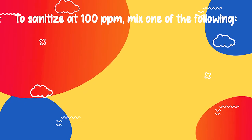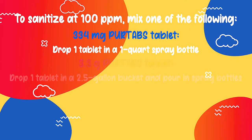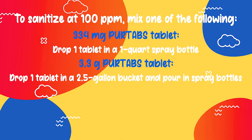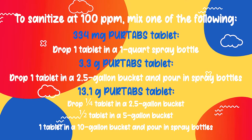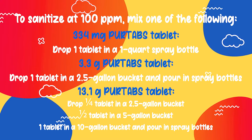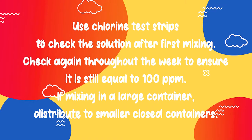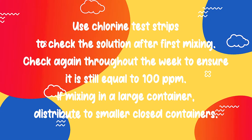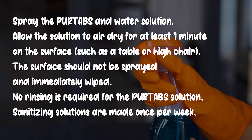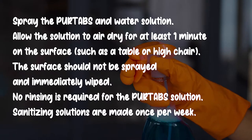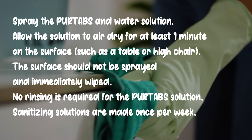To sanitize at 100 ppm, mix one of the following: for a 334 mg Pure Tabs tablet, drop one tablet into a one-quart spray bottle; for a 3.3 gram tablet, drop one tablet into a 2.5-gallon bucket and pour into spray bottles; for a 13.1 gram tablet, drop a quarter tablet into a 2.5-gallon bucket, a half tablet into a 5-gallon bucket, or one tablet into a 10-gallon bucket, and pour into spray bottles. Use chlorine test strips to check the solution after first mixing and again throughout the week to ensure it remains at 100 ppm. Spray the Pure Tabs solution and allow it to air dry for at least one minute on the surface. The surface should not be immediately wiped, and no rinsing is required. Sanitizing solutions are made once per week.